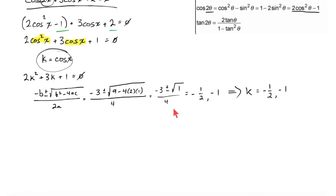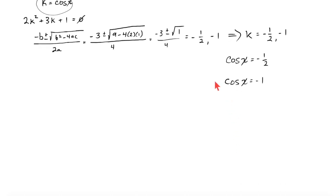But remember what k was. k was equal to cosine of x. What we've got here is the cosine of x is equal to on the one hand negative one half, on the other hand negative one.